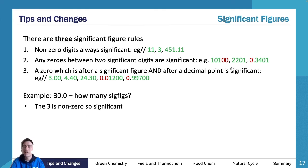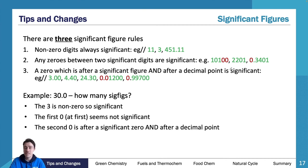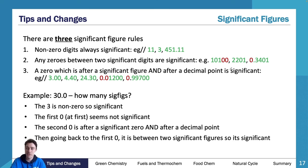The three is a non-zero, so it's significant. The first zero at first seems not significant, but then the second zero is after a decimal point, so therefore it's going to be significant. And then the first zero becomes significant because it's between the two. So therefore, I have three significant figures.